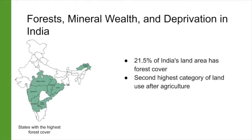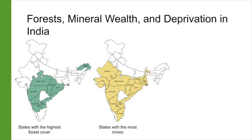Madhya Pradesh, Arunachal Pradesh, Chhattisgarh, Maharashtra, and Odisha have the largest area under forest cover. The mineral wealth of the country is also concentrated in these states. Ninety percent of the mines operating in India are in Andhra Pradesh, Orissa, Chhattisgarh, Jharkhand, West Bengal, Maharashtra, Tamil Nadu, Gujarat, Madhya Pradesh, Rajasthan, and Karnataka.